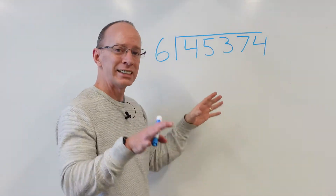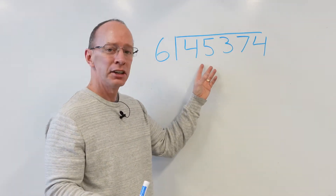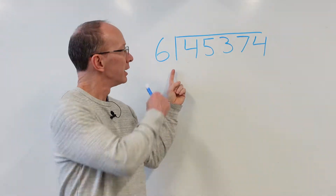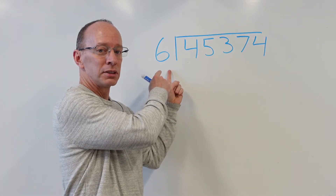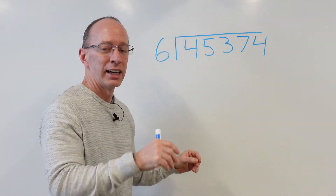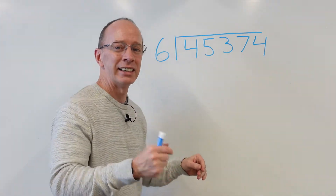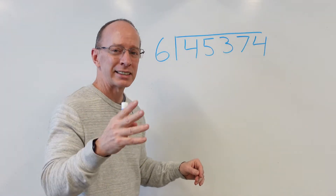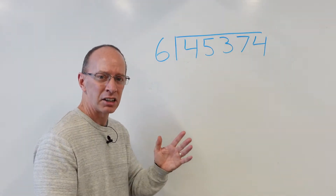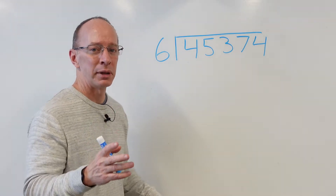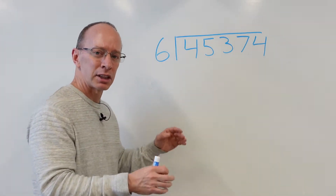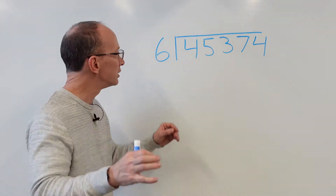Basically, what division is: you have a number right here and you have to divide it into six equal groups. Remember, there are steps when you are dividing. Our first step is to divide. The next step is to multiply. Next step, subtract. Next step, bring it down. And then our next step is to repeat. Let's take baby steps, little by little — easy cheesy, lemon squeezy.